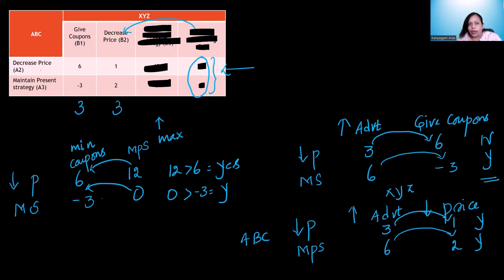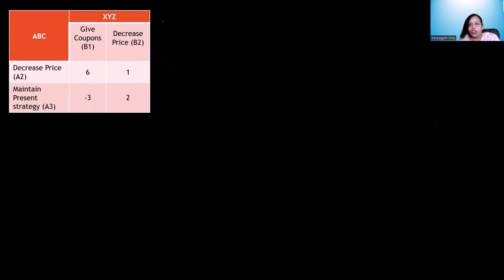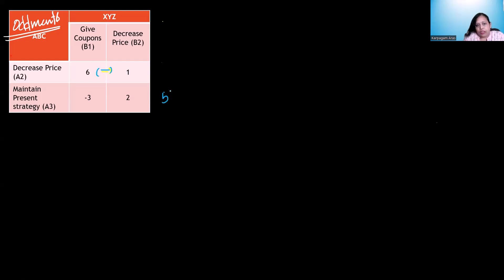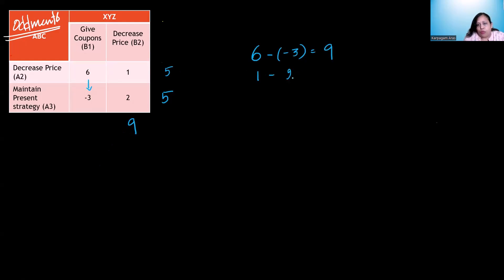Since this is a mixed strategy, we still haven't reached the answer. Now we solve this 2x2 payoff matrix using the oddment method, which is the simplest approach. We create oddments: do 6 minus 1 = 5, write it in the row below. Minus 3 minus 2 = minus 5, ignore the sign, so 5. Similarly, 6 minus (minus 3) = 9, and 1 minus 2 = 1. So 5 plus 5 = 10, and 1 plus 9 = 10.